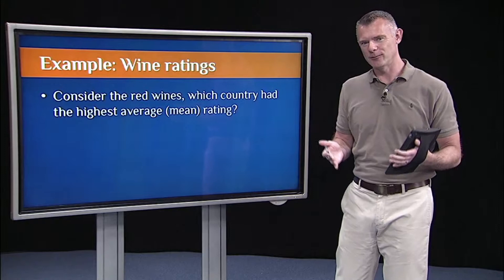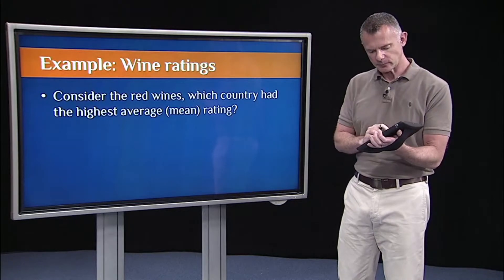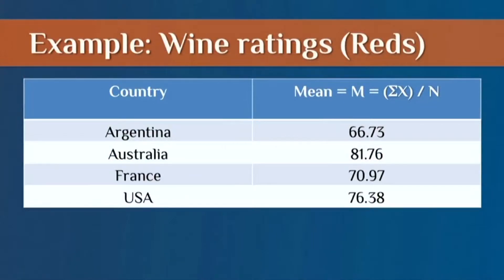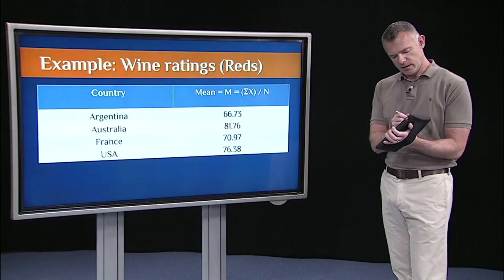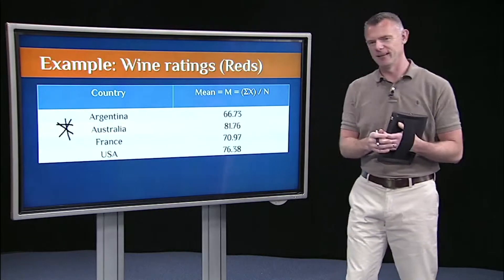So let's look at the overall rankings. If we just want to look at the average, let's stick with the reds for now. Here are the means we calculated from the data we generated. The mean for the Argentinian Malbec was 66.73, the Australian Shiraz was 81.76, the French red was 70.97, and the USA Cabernet was 76.38. So in this simulation, Australia won. Again, this was completely random — we did not fix this.